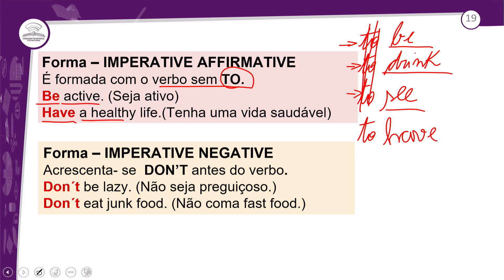Para a forma negativa do imperativo, vocês precisam acrescentar 'don't' na frente da ação. Se eu falo 'be active', seja ativo, quando falo 'don't be active' significa não seja ativo — já é uma outra ideia. 'Don't be lazy', não seja preguiçoso. 'Don't eat junk food', não coma fast food — aquelas comidas de rápido preparo como McDonald's. Não coma o tempo inteiro esse tipo de comida porque pode te fazer mal.